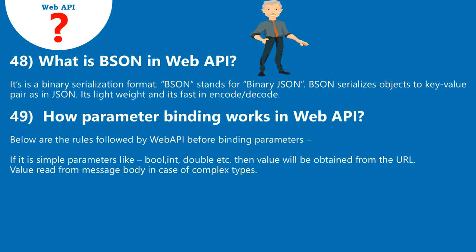Question 49: How does parameter binding work in Web API? Below are the rules followed by Web API before binding parameters: if it is a simple parameter like bool, int, double, etc., then the value will be obtained from the URL; values are read from the message body in case of complex types.